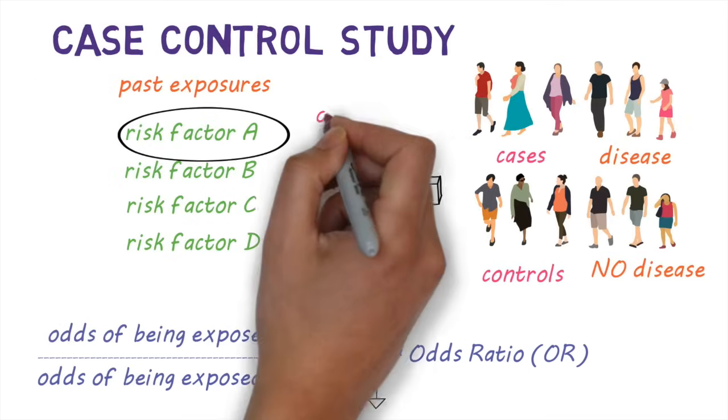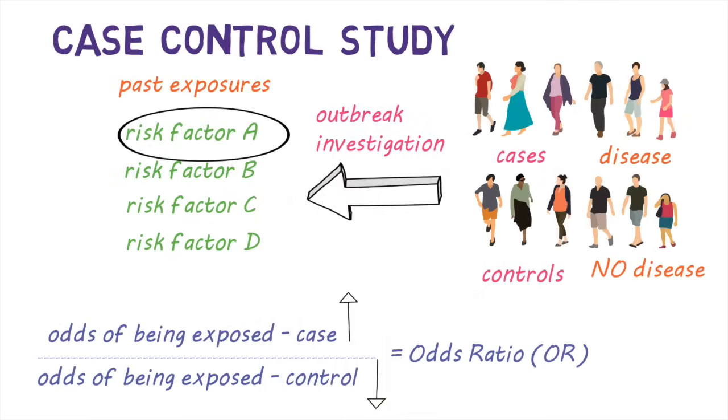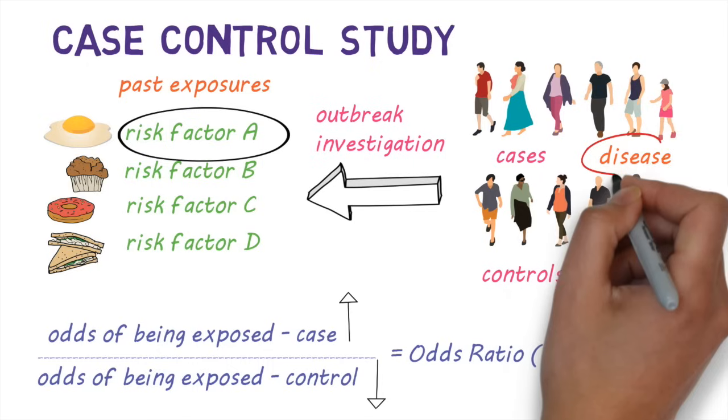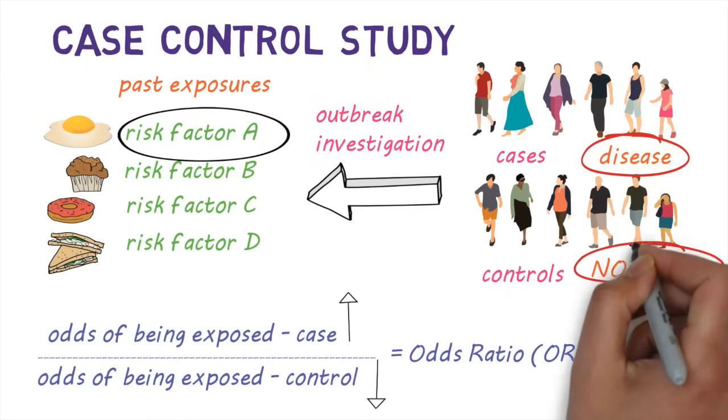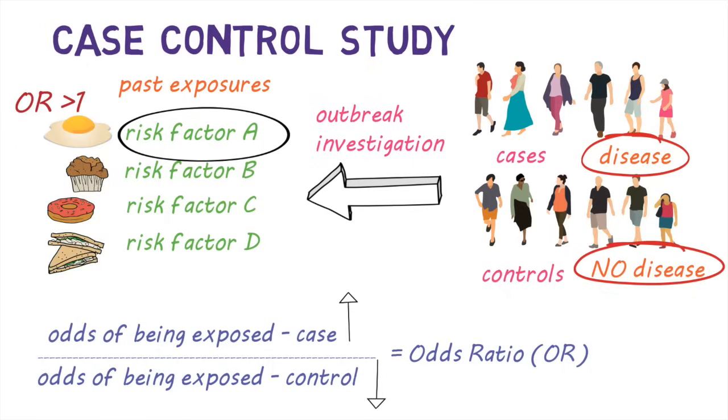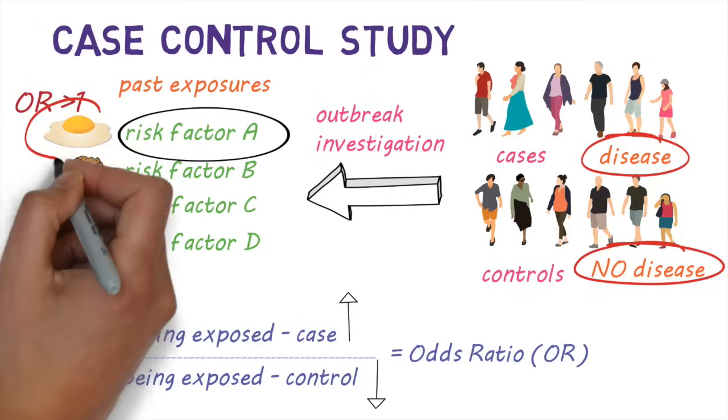Case control studies are commonly used in foodborne outbreak investigations. For example, we can compare the odds of eating different kinds of food between people who fell ill after consuming a meal and those who didn't. If the odds ratio is greater than one for a particular type of food, then it's possibly the cause of the illness.